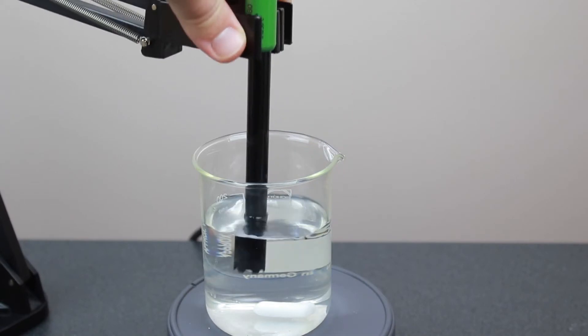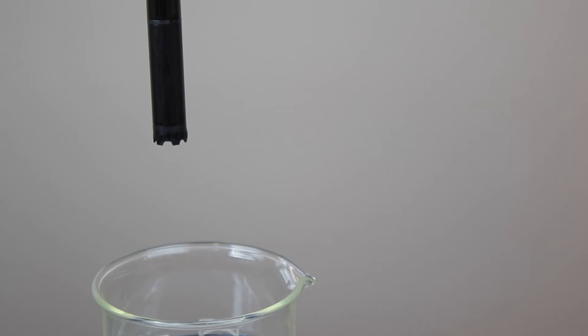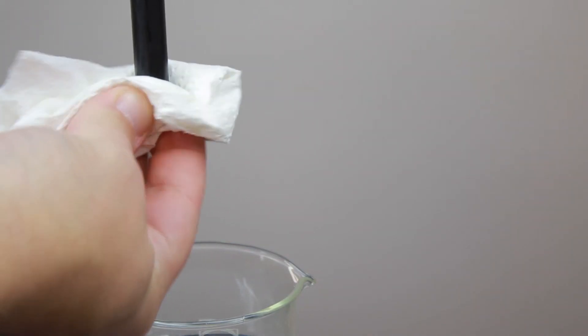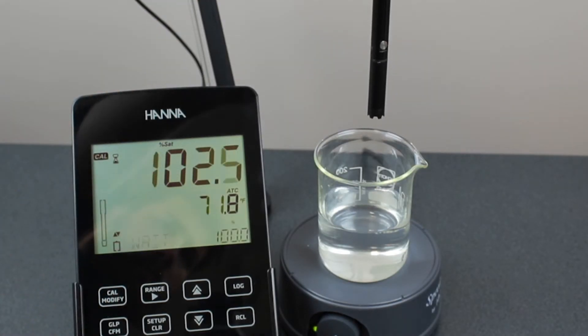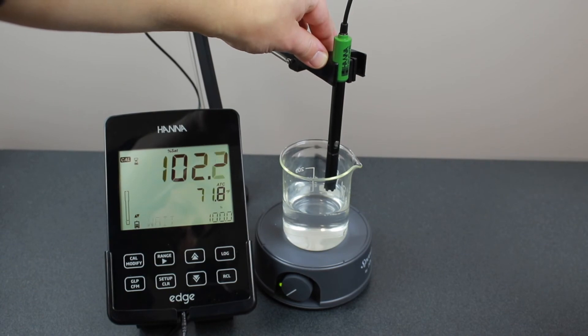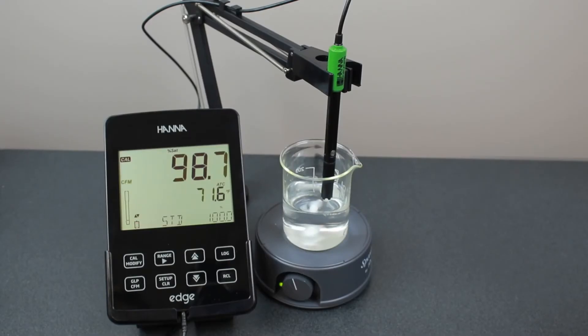To perform a 100% dissolved oxygen calibration, rinse your HI764080 polarized probe with clean water and then dry the tip. Suspend the probe just over a beaker of water and press CAL. When the reading is stable and is within the limits, press confirm.